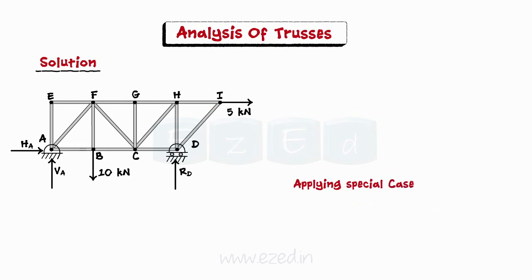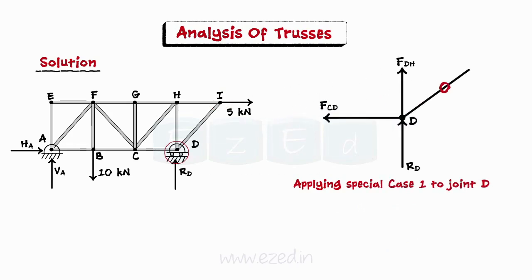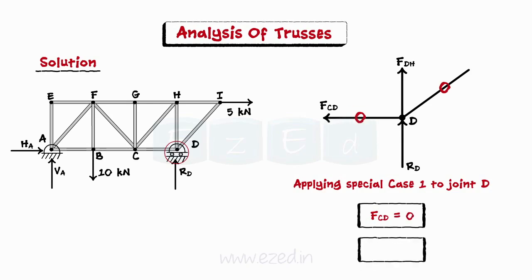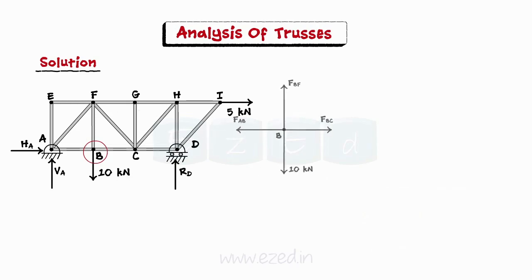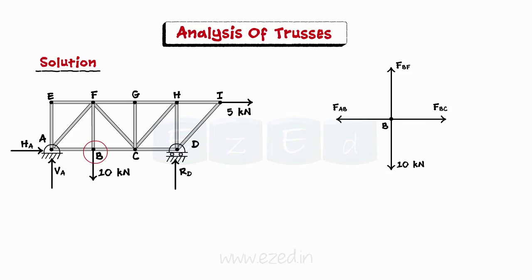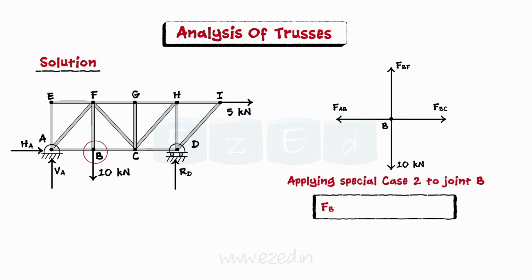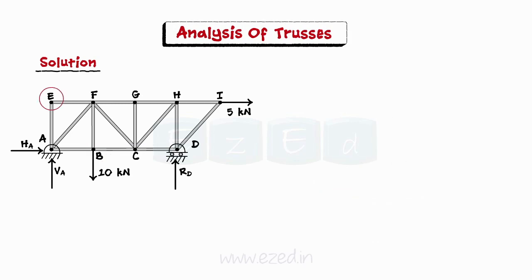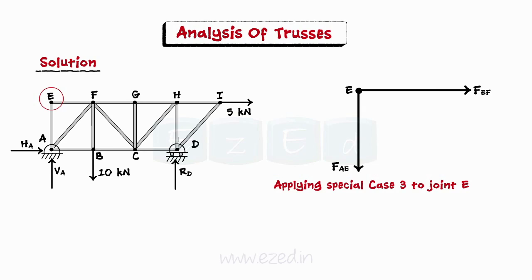Similarly, we can now apply special case 1 to joint D, as member DI has no force and thus joint D has only three members. We can conclude that force in member CD is equal to zero. Also, forces in members DH and support reaction at D are equal. Let us now consider joint B. It consists of three members, with two members being collinear and an external force which is collinear to the third member. Hence, we can apply case 2 to this joint. Thus, we identify force in member BF as 10 kN and tensile in nature. Also, force in member AB is equal to force in member BC. Let us now consider joint E. It consists of only two members with no external loading. Hence, we can apply case 3 to this joint. Thus, we conclude force in members AE and EF is equal to zero.